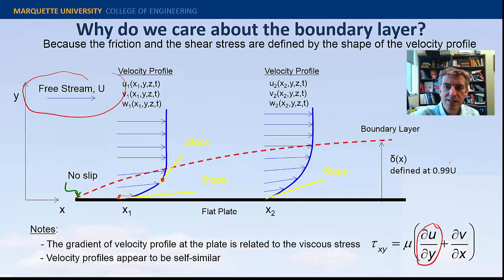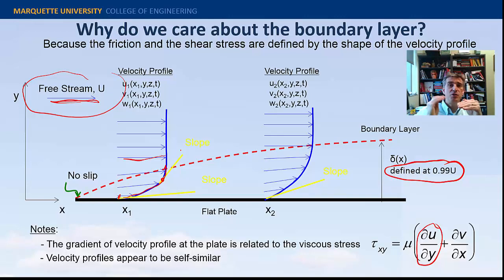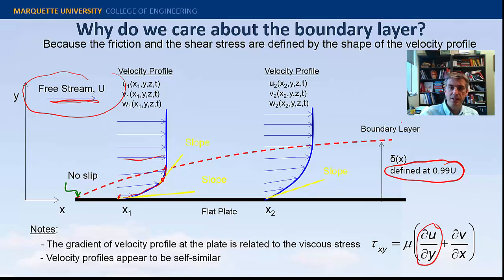The boundary layer is defined as the location where the velocity reaches 99% of the free stream velocity. Moving upward from the wall where the no-slip condition gives zero velocity, the velocity increases until it reaches approximately the free stream value. That demarcation is the boundary layer — separating the viscous influence from the inviscid influence. This layer grows as flow moves down the plate, and we typically denote the boundary layer height as delta, a function of x.